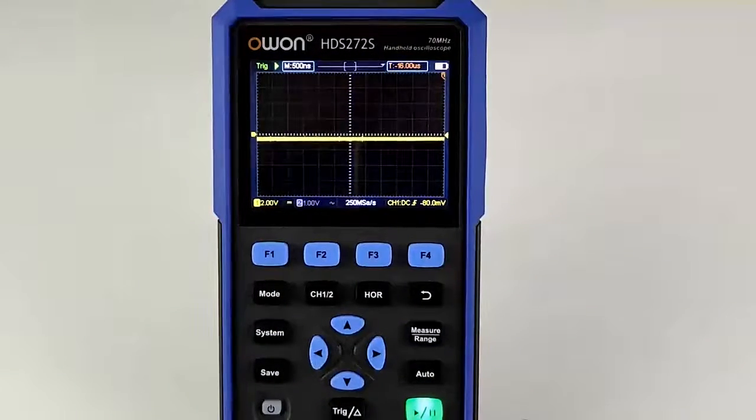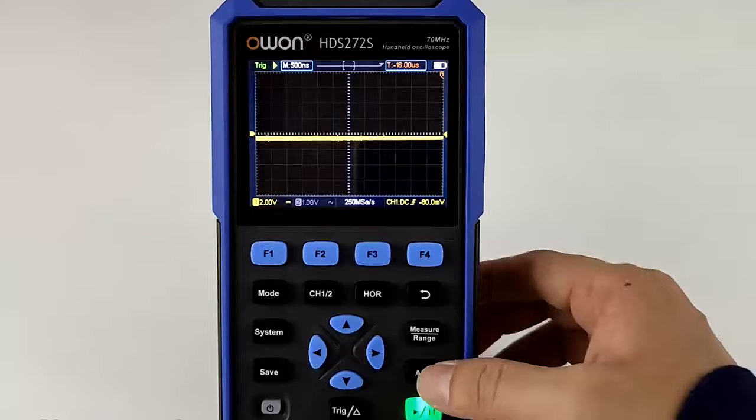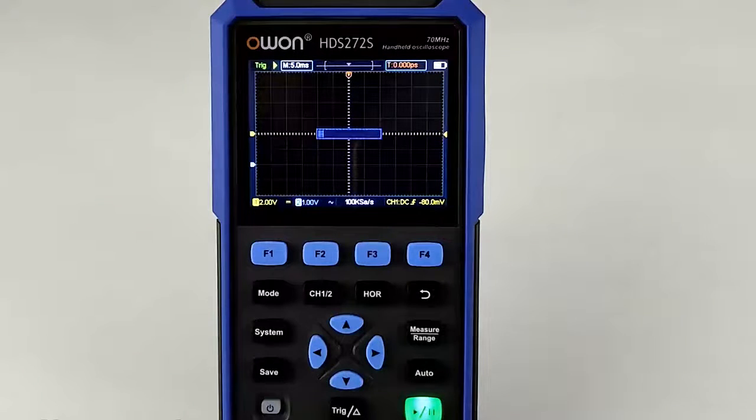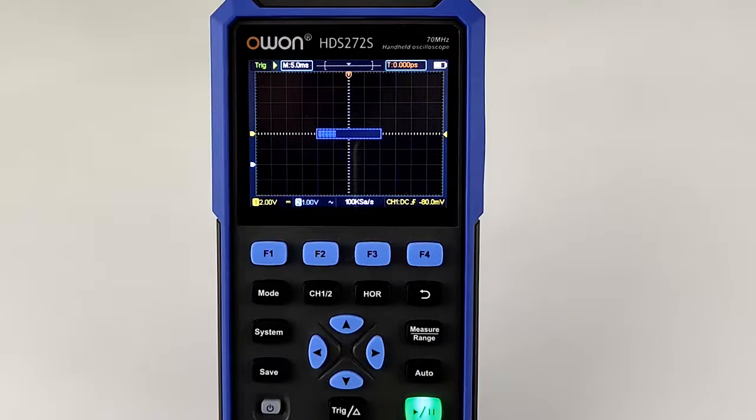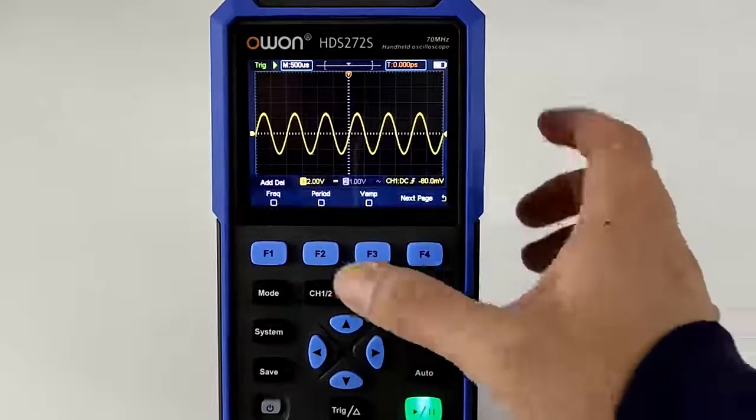Now let's look at the oscilloscope function. 40 MHz or 70 MHz bandwidth, 250 mega sampling rate, max 8000 record length. Built-in 7 kinds of automatic measurement.